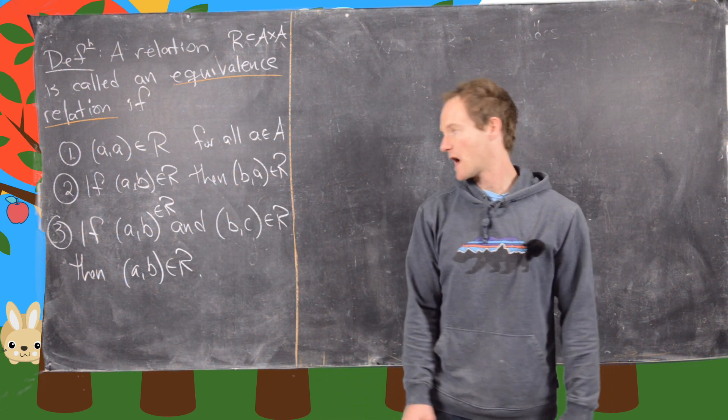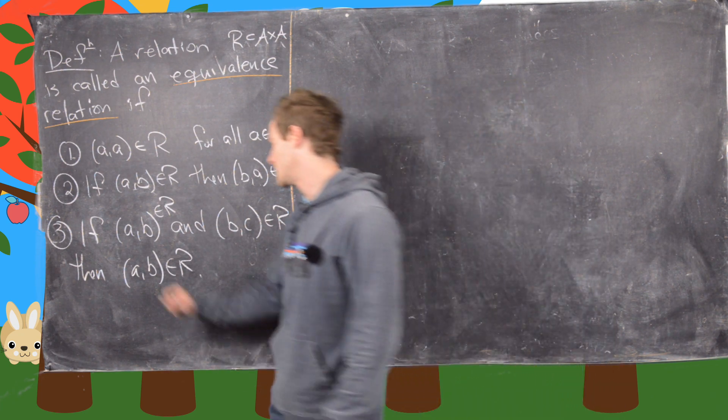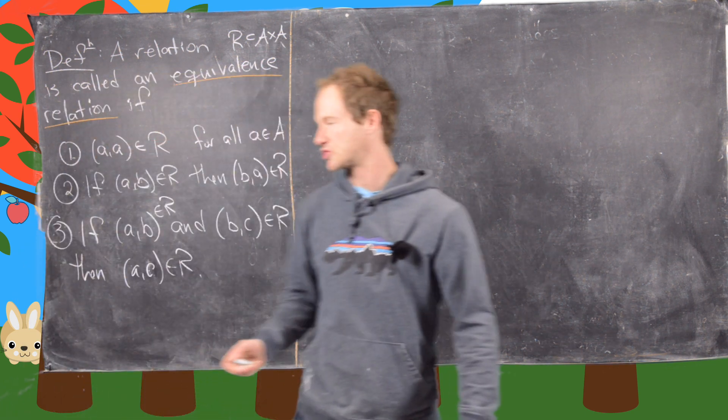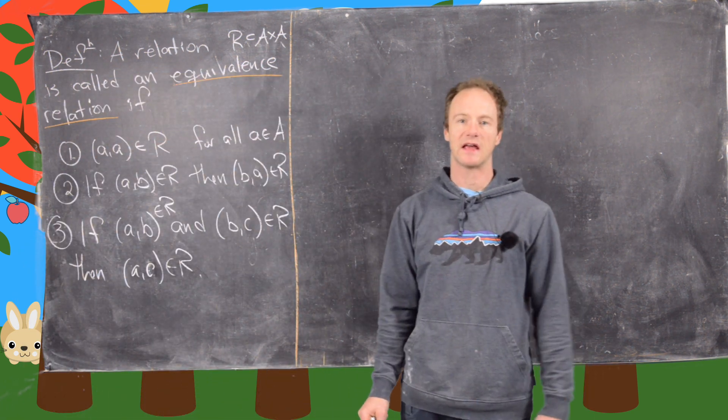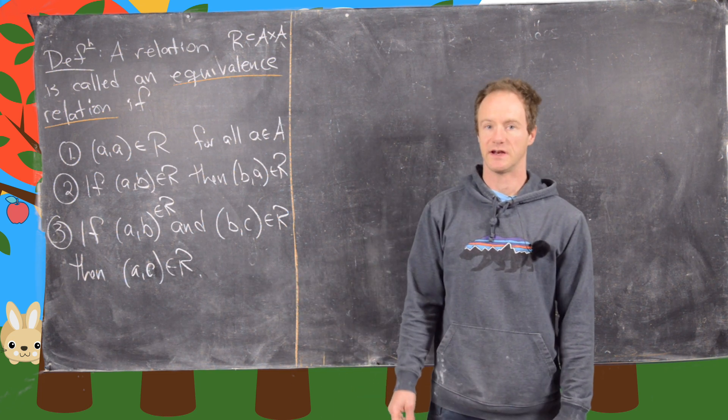And then finally, if A, B is in R and B, C is in R, then A, C is in R, and that's called transitivity. So in other words, if A and B are related and B and C are related, then A and C are related.